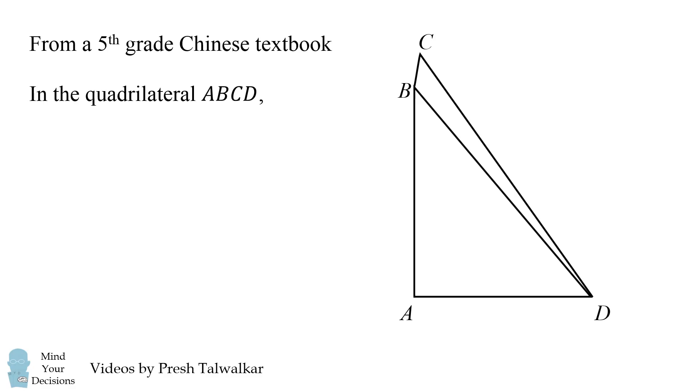Here's a problem from a 5th grade Chinese textbook. In the quadrilateral ABCD, angle A is equal to 90 degrees, angle ABD is equal to 40 degrees, and angle BDC is equal to 5 degrees.